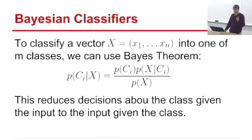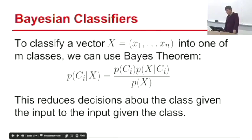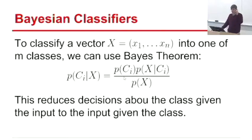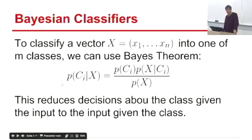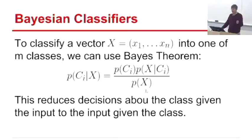The prior probability of class i — independent of any features — is our prior knowledge of the distribution. For example, if classifying by nationality, knowing there are more Chinese and Indian people than Maltese helps. The denominator is the overall probability of the feature vector in the entire world, which is a strange and difficult thing to compute.